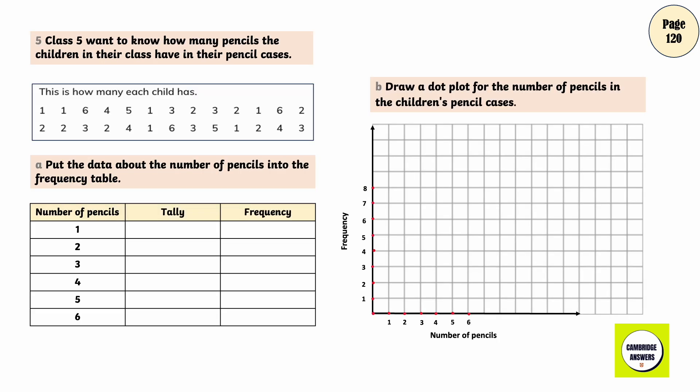Class 5 wants to know how many pencils the children in their class have in their pencil cases. This is how many each child has. Put the data about the pencils into the frequency table. 6, 7, 5, 3, 2, 3.